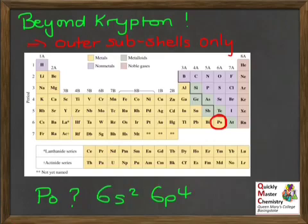And you should have written 6S2. Cesium and barium, Cs and Ba, have completed the 6S subshell, and then polonium is the fourth element into the 6P bit of the periodic table, and so it ends 6P4.